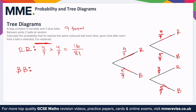For blue then blue: on the first draw it's five ninths. Then the second one — blue and a blue — is five ninths again, so the AND rule is used again. Multiplying these together gives 25 over 81.